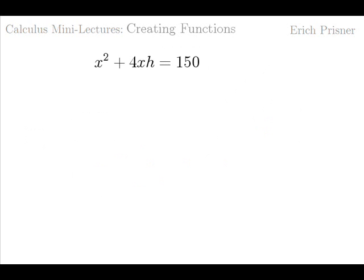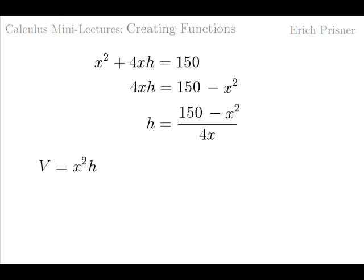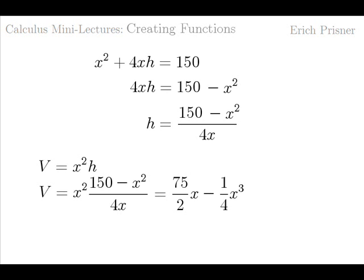For this we have to get rid of the other variable, h. We solve the first equation for h and get h equals 150 minus x squared divided by 4x. Then we substitute h in the second equation by this expression and get V equals x squared times 150 minus x squared divided by 4x, which is equal to 75 over 2 times x minus 1 fourth x cubed. We write V of x to indicate that V is now a function of x.